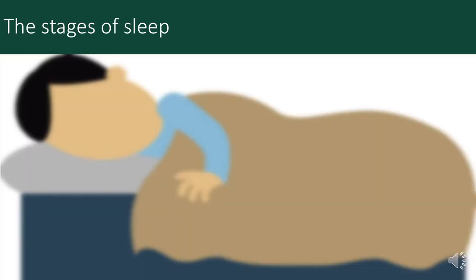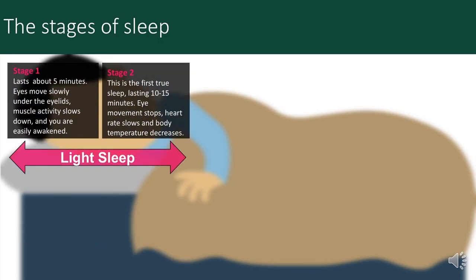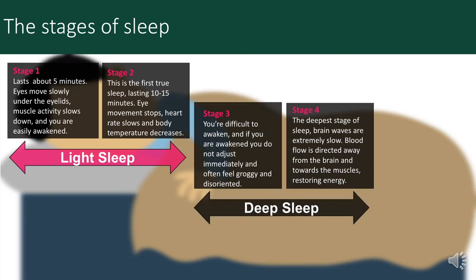The stages of sleep are also really interesting. The first two stages, called light sleep, can last up to 20 minutes. These basically get your body ready to enter the deep sleep stage by slowing your heart rate and dropping your body temperature. The next two stages are deep sleep — this is where your brain activity slows so that blood flow can be directed towards your muscles, away from your brain and organs, restoring your energy for the day ahead.